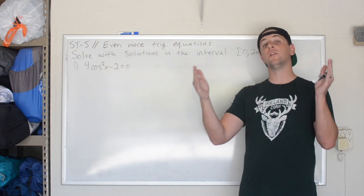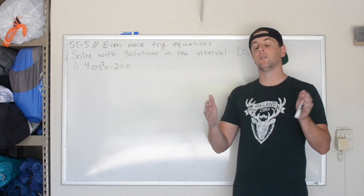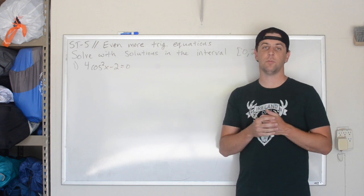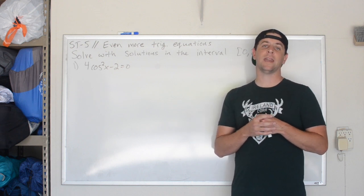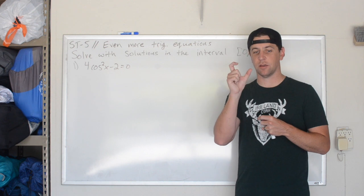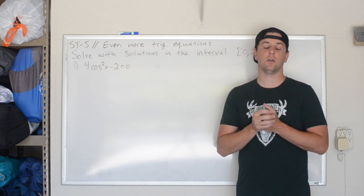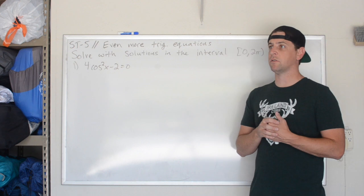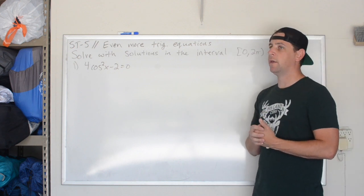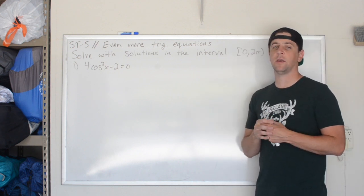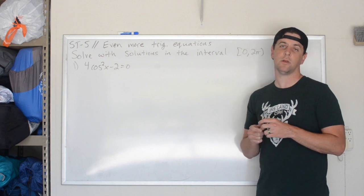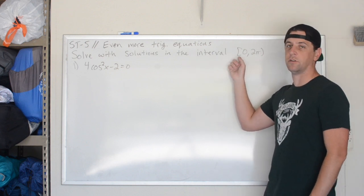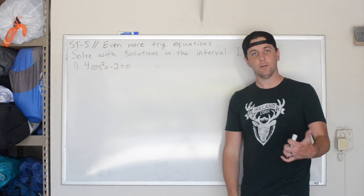On one of them we solved with infinite solutions. On the last one we solved with solutions of 0 to 2 pi. We were looking at when the inside value was like sine of 2x or 3x and we had a u substitution. Today we're going to solve some equations where solving may not be as straightforward. We'll find solutions in the interval 0 to 2 pi. Without further ado, let's get to it.